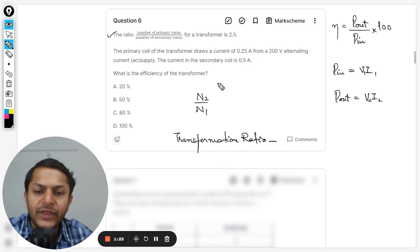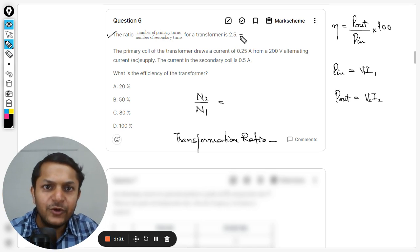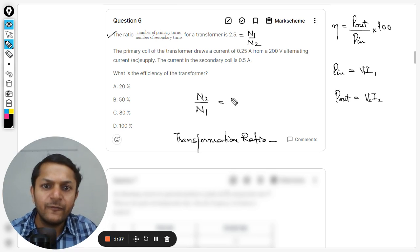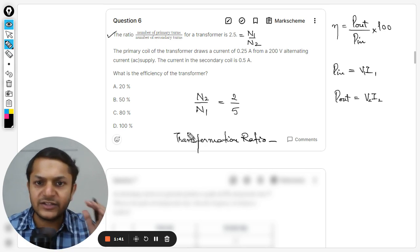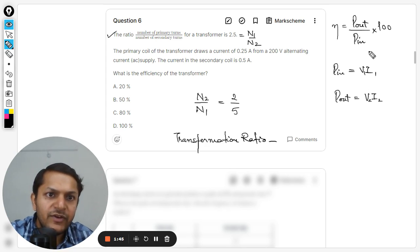Now, n2 by n1 is given, but it is not 2.5. Be very careful here, this value is n1 divided by n2 because it is primary by secondary. So this can be taken as 5 by 2, so this will be 2 by 5. I've just reciprocated it, so this is n2 by n1.